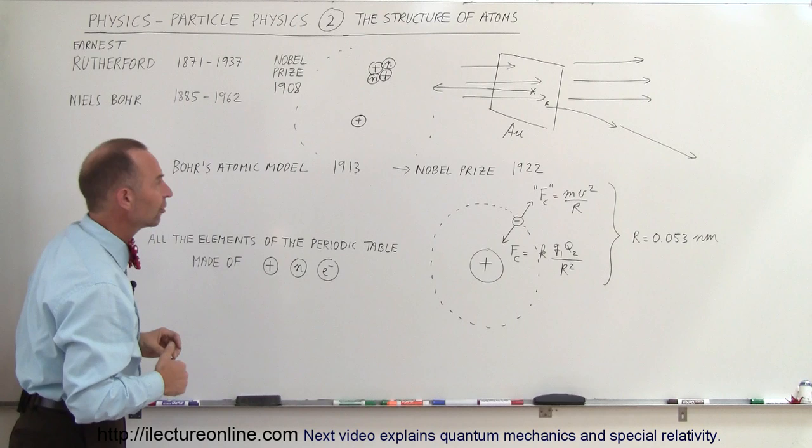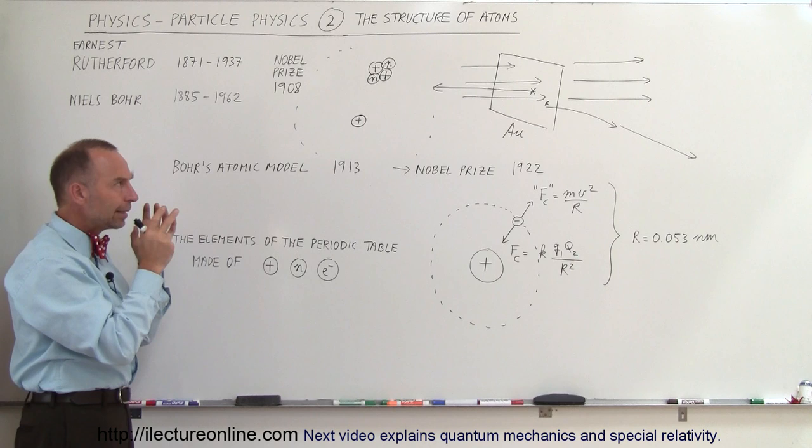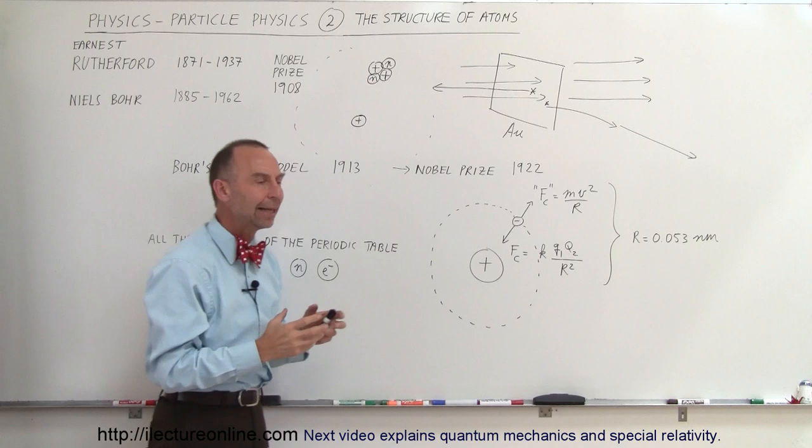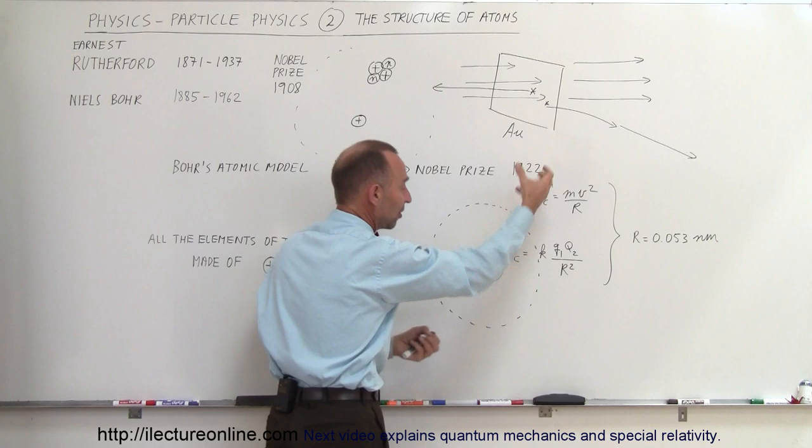Then came along Niels Bohr. He took what Rutherford learned and tried to put that into a mechanical system. And he began to realize that if there were going to be positive and negative particles inside an atom like that, they couldn't just be stationary because if a negative particle would be sitting here and a positive particle would be sitting here, they would simply attract each other almost instantly and become one.